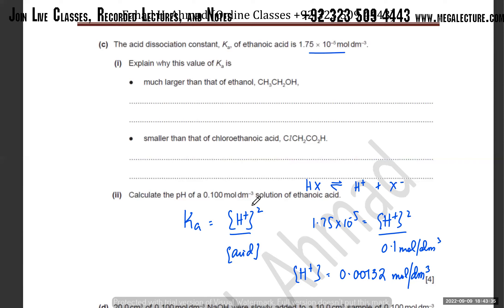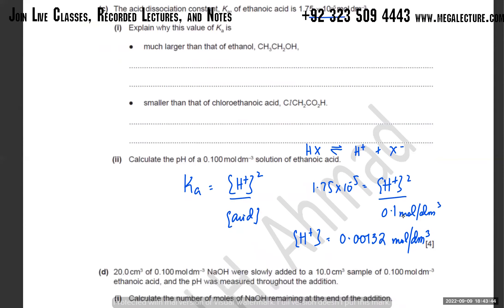The acid concentration is given, and the pH comes out to be 2.88. That's the pH for ethanoic acid.